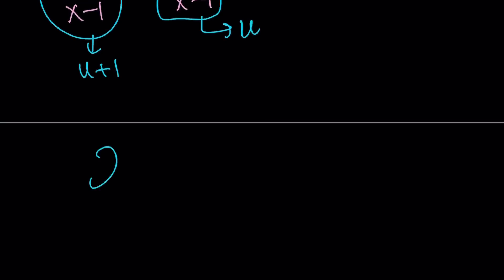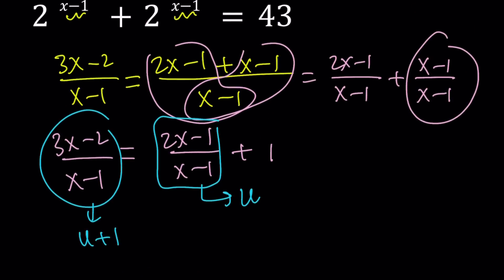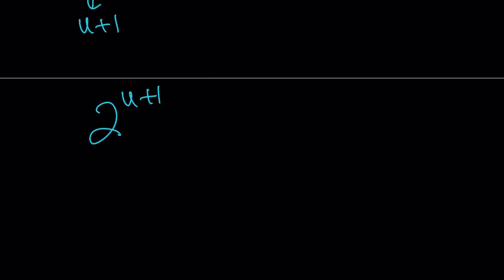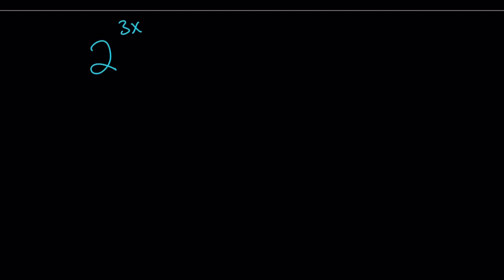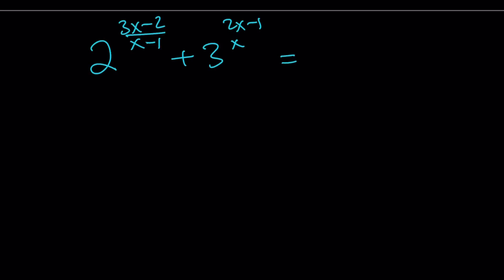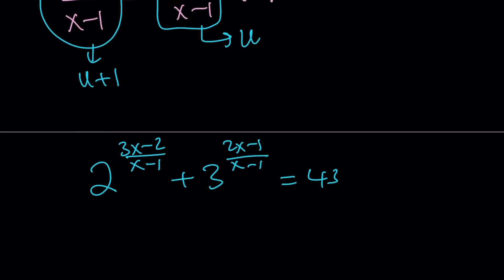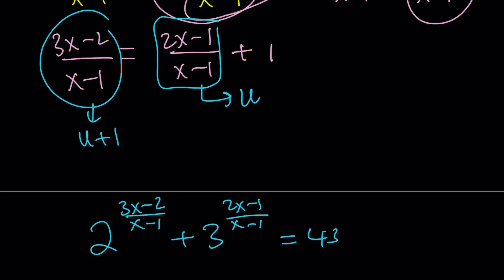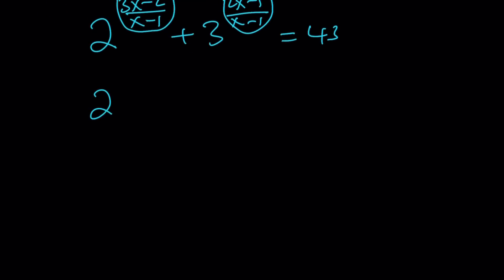So this gives us the following. Let me rewrite the equation clearly: the original problem was 2 to the power of (3x minus 2) over (x minus 1), plus 3 to the power of (2x minus 1) over (x minus 1), equals 43. Based on our substitution, the first exponent is u plus 1 and the second is u. So we have: 2 to the power of (u plus 1) plus 3 to the power of u equals 43.